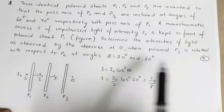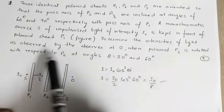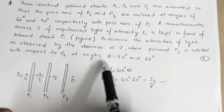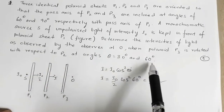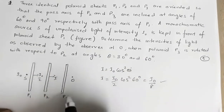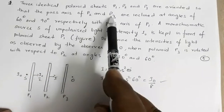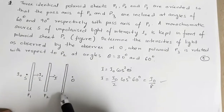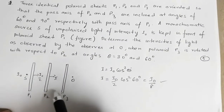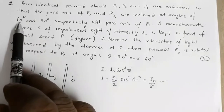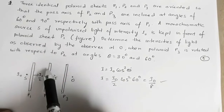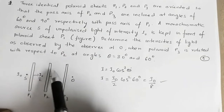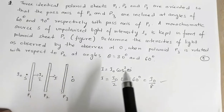Now the question asks for the intensity at observer O when P3 is rotated with respect to P2 at angles 30° and 60°. P1, P2, and P3 make angles of 60° and 90° respectively with P1, so the initial angle between P2 and P3 is 30°, since the difference is 30°.